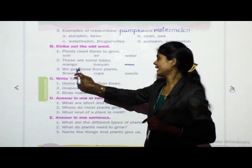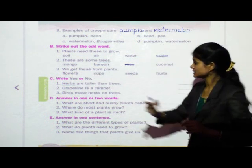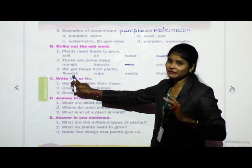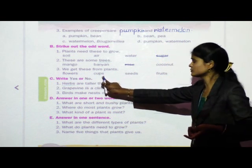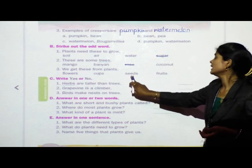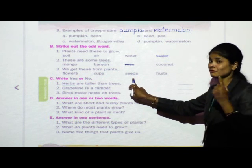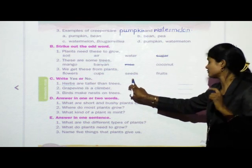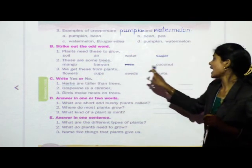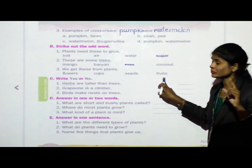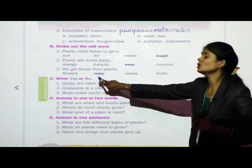Third question: we get these from plants. The options are flowers, cups, seeds, and fruit. We get flowers from plants. Do we get cups from plants? No. We get seeds from fruits and fruits from plants. So flowers, seeds, and fruits we get from plants. But we don't get cups from plants — so cups is the odd one. Strike it out.